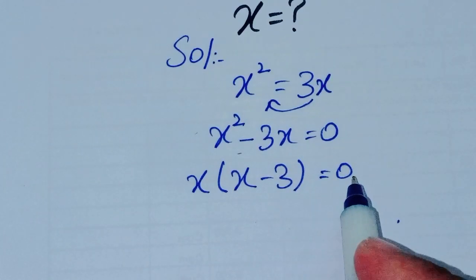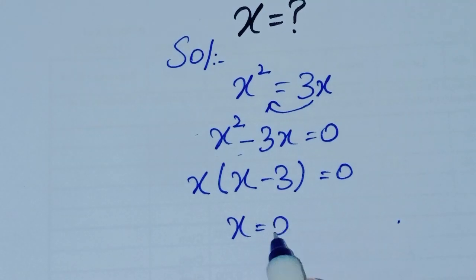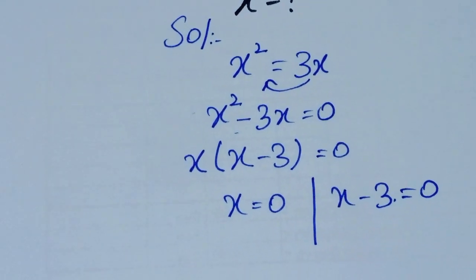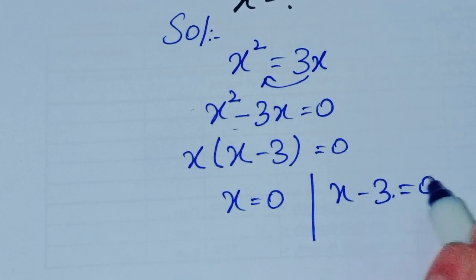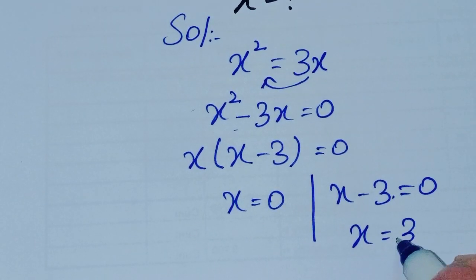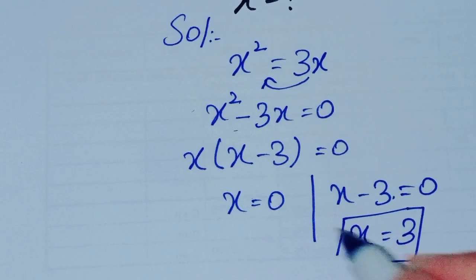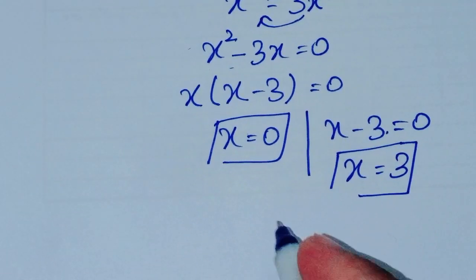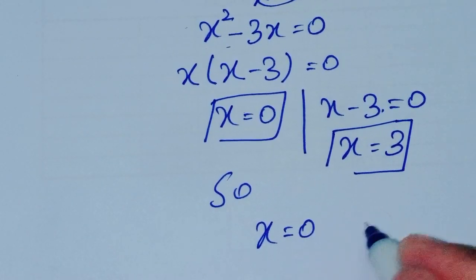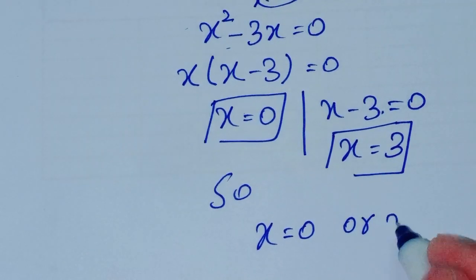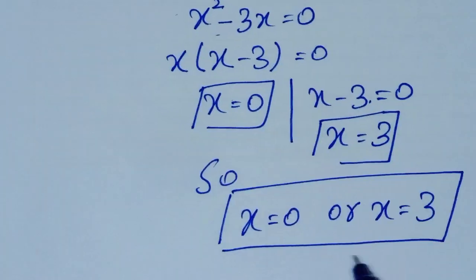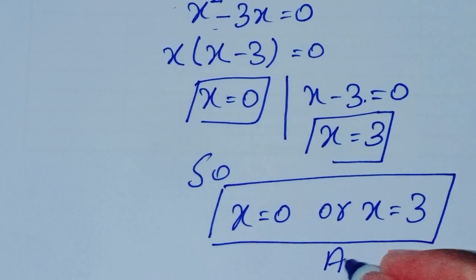Both factors are set equal to 0: x is equal to 0, and x minus 3 is equal to 0. Shifting minus 3 to the other side gives x is equal to 3. So x is equal to 0 or x is equal to 3. This is the answer to this question.